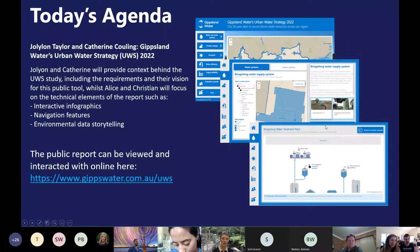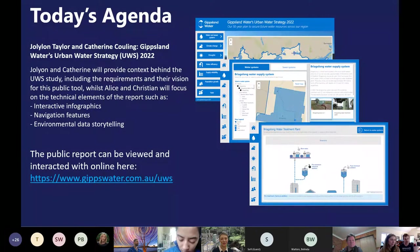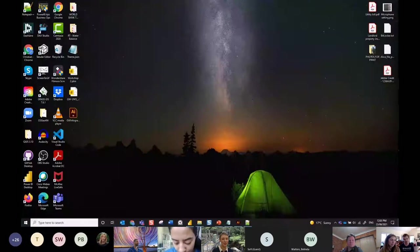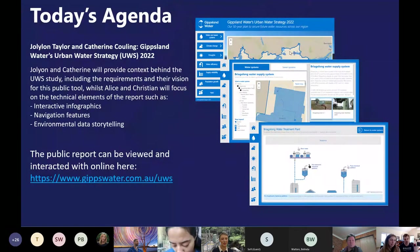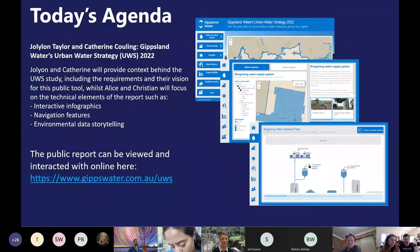On to the main event today — our special guests are Jollian Taylor and Katherine Cooling from Gippsland Water. Jollian is a Senior Water Resources Engineer and Katherine is a Strategic Planning and Resources Engineer. We've been working with them both and the team over the past few months, helping to develop this urban water strategy using Power BI. Today they'll take us through the idea, the vision, and walk us through each of the dashboard pages.